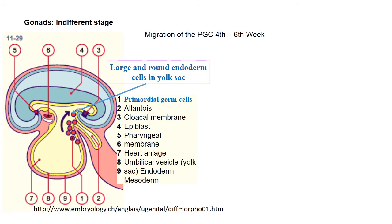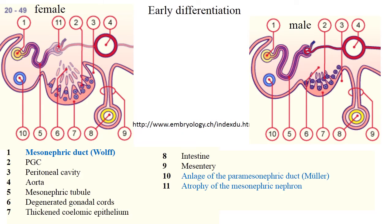On this slide you can distinguish early differentiation of male and female reproductive systems. Pay attention to the mesonephric duct left after the mesonephros — you can see atrophy of mesonephric nephrons on both sides. Also pay attention to the enlargement of the paramesonephric (Müllerian) duct, and the coelomic epithelium and gonadal cords are clearly visible. Between the gonadal thickening of epithelium you can distinguish primordial germ cells.